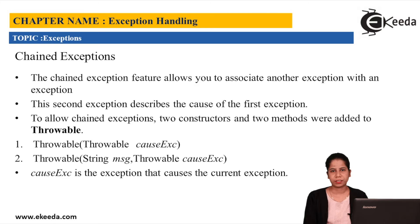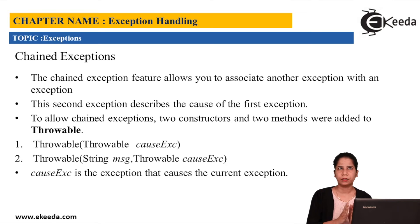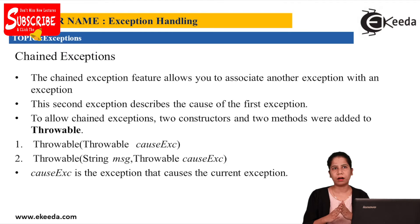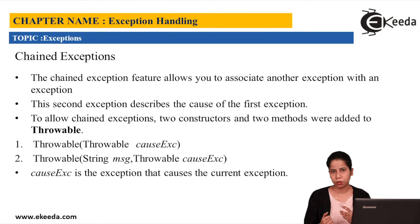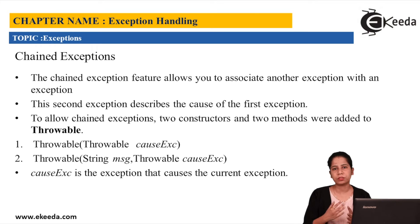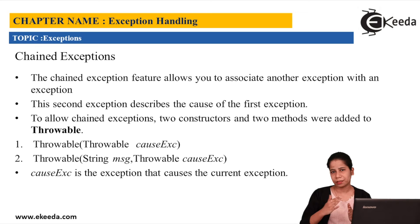So basically, what is chained exception? Let's have an example. Let's say I am doing some calculations and while doing that calculation, I came across an arithmetic exception or division by zero. Now basically, these particular values I am fetching from some file. And now I am not able to read the file, or because of some IO exception, I was not able to read the file, and because of that all the variables in that arithmetic operation were set to zero, and because of it I got a division by zero. So basically in this scenario, is the arithmetic exception the real cause of the exception? No, it's not.